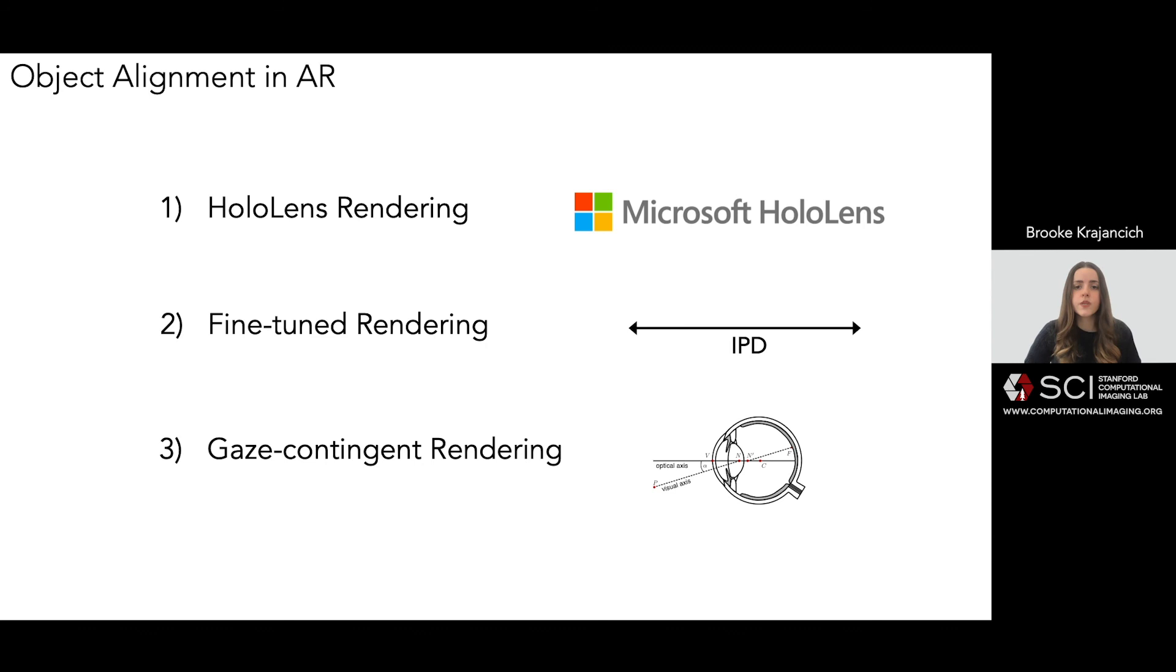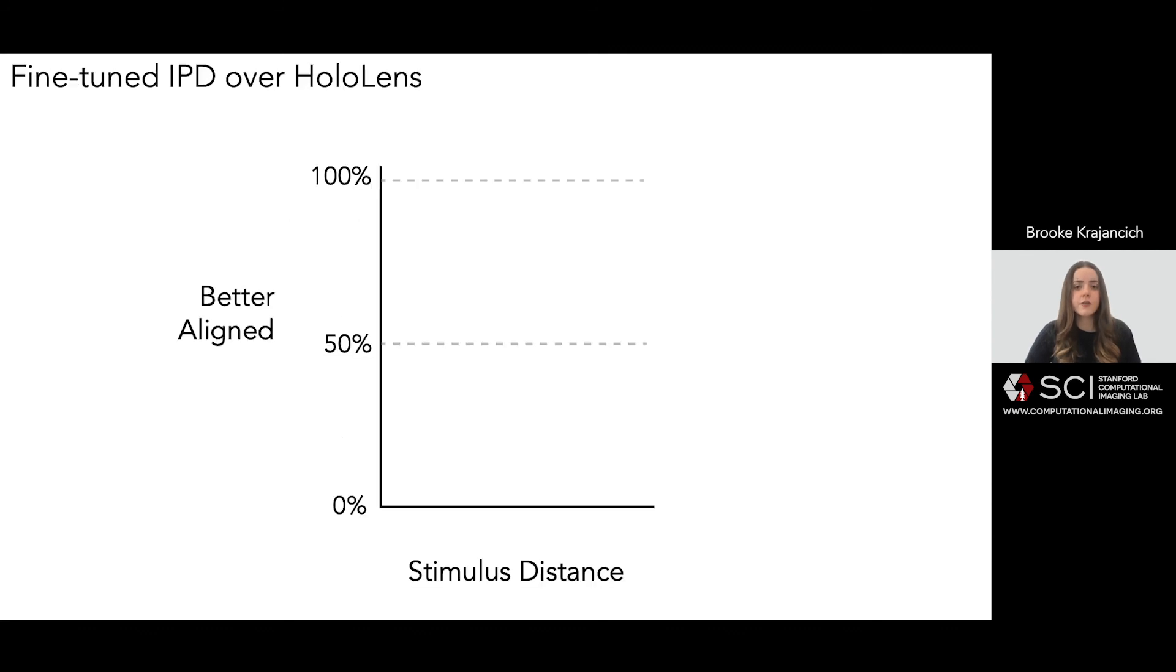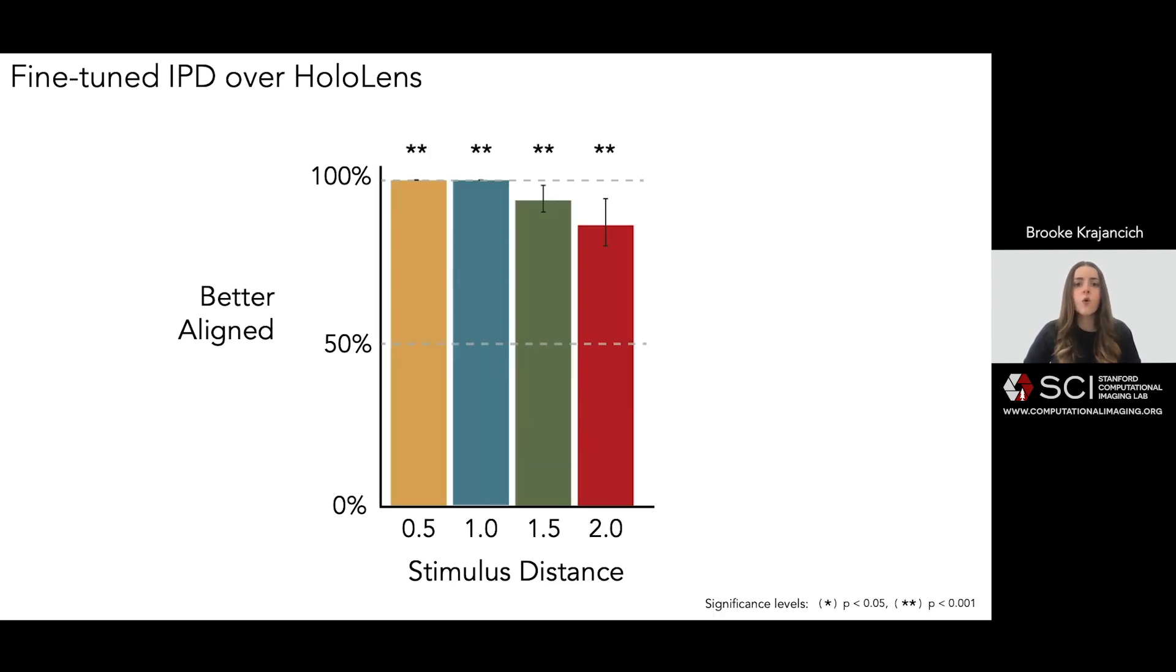In the first set of trials, we compared HoloLens to fine-tuned rendering modes, asking subjects to identify which of the two display modes provided the best alignment in depth with the physical target. We found that at all distances, the fine-tuned mode was selected as significantly more accurate than HoloLens rendering.